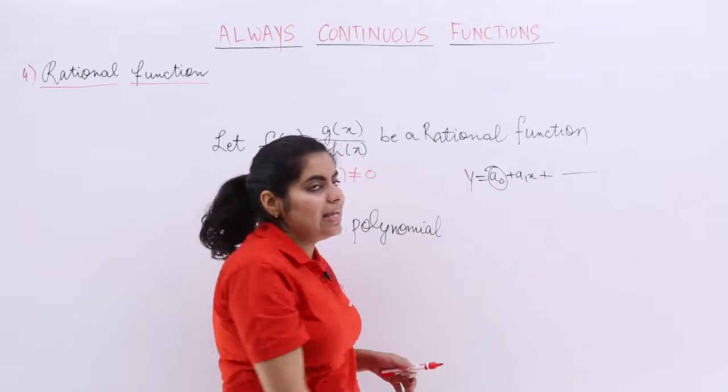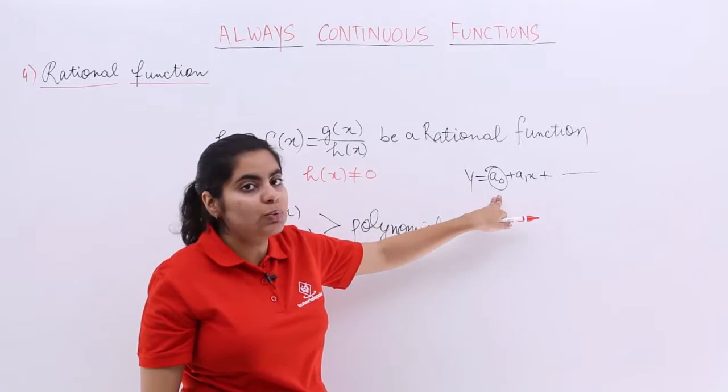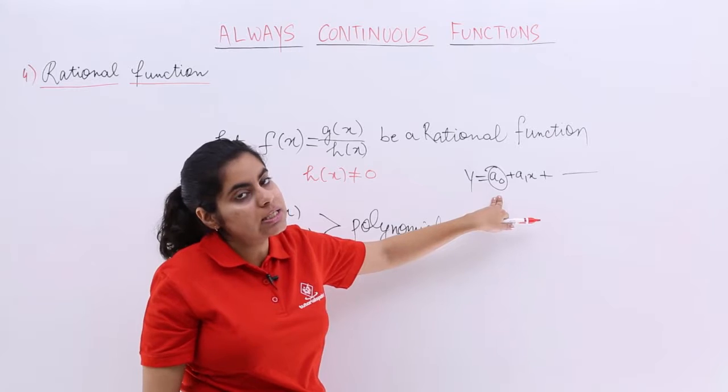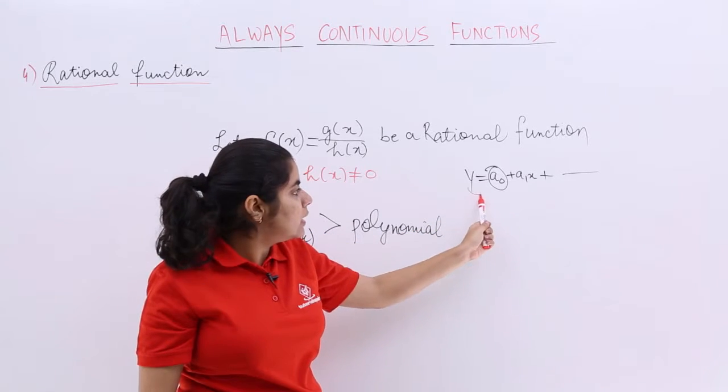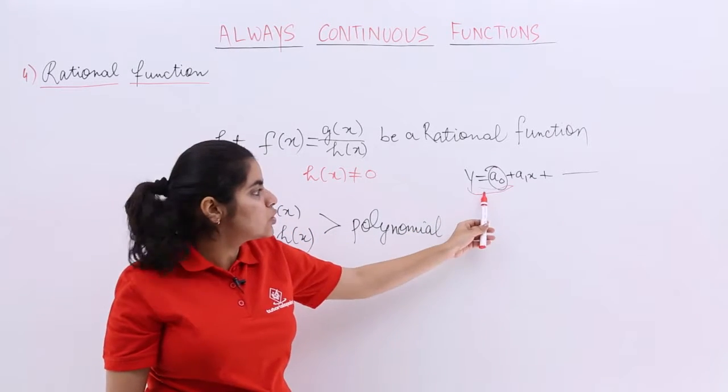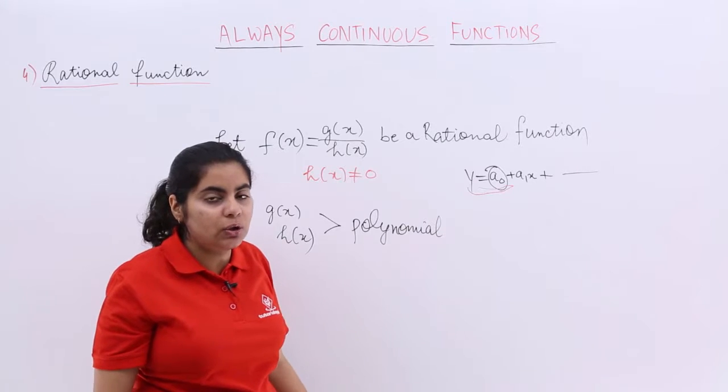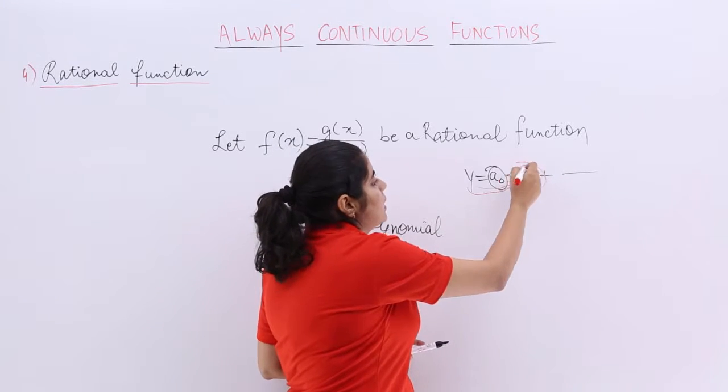Now, if it is only a₀, that means the power n equals zero. Still, it is obtained from this polynomial function. So constant function is obtained from polynomial.